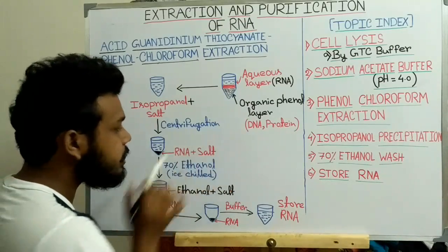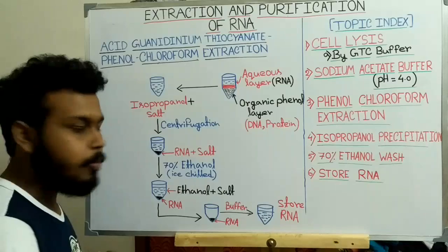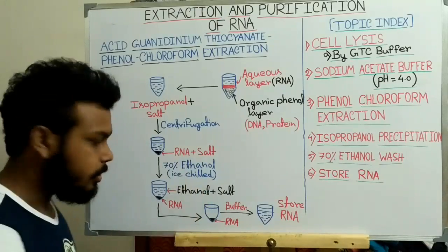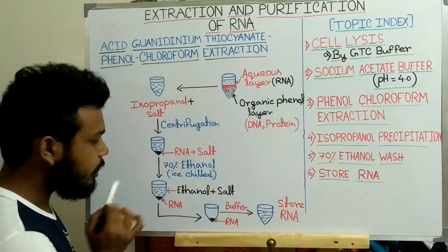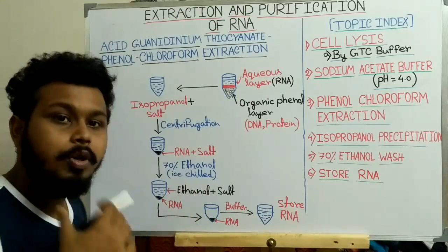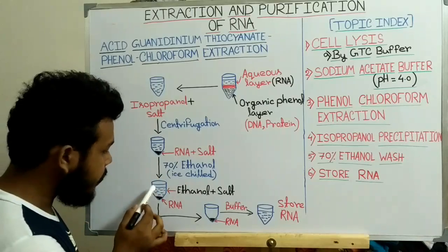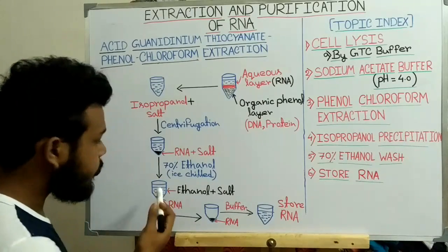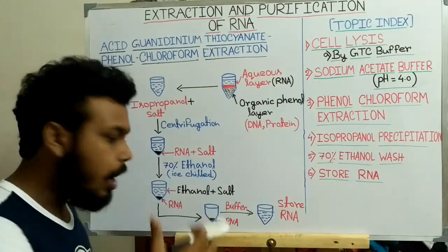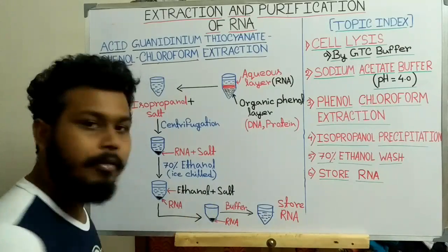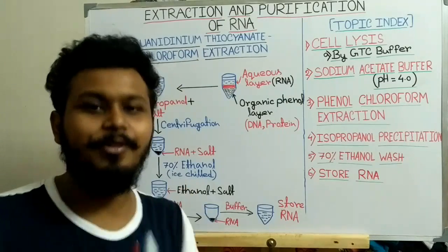To remove the salt contamination, we first remove the isopropanol and then add 70% ethanol to the RNA pellet. Salt is more soluble in ethanol than in isopropanol, so the salt molecules dissolve into the ethanol. We then evaporate the ethanol, leaving only the purified RNA molecules. Finally, we store the RNA by adding an appropriate buffer. This completes the extraction and purification of RNA.